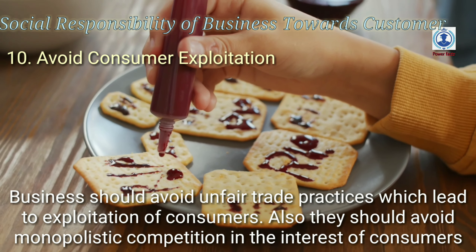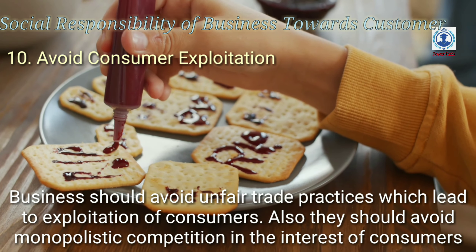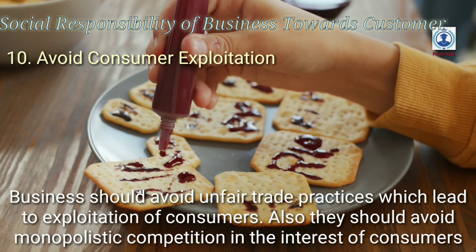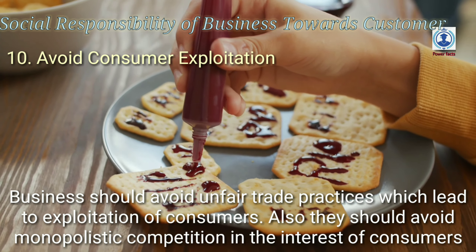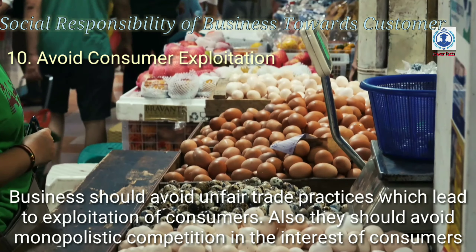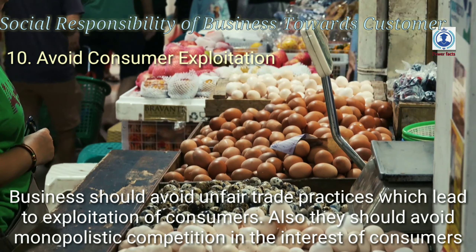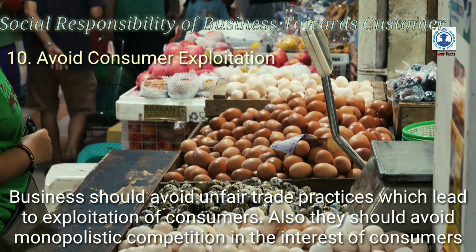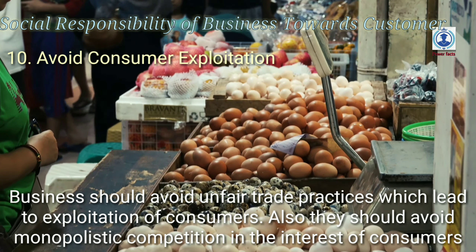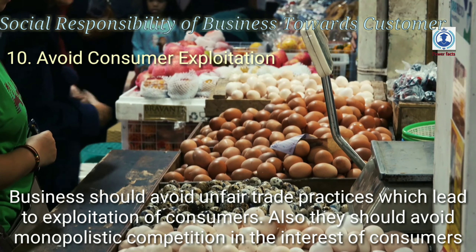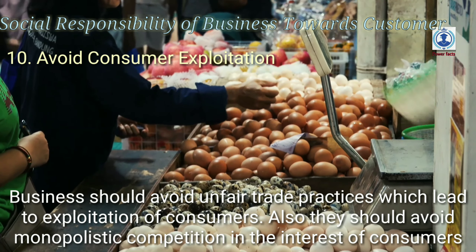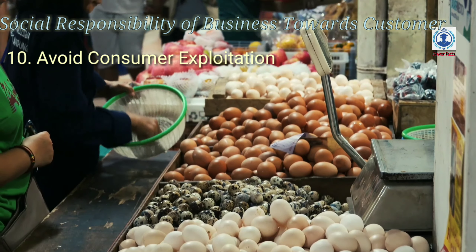Tenth: avoid consumer exploitation. Entrepreneurs should avoid adulteration. Adulteration in life-saving goods like medicines, food items and drinks is damaging for the lives of people. Also, business should avoid monopolistic practices in the market where only a few sellers are charging high prices, as this will exploit consumers.